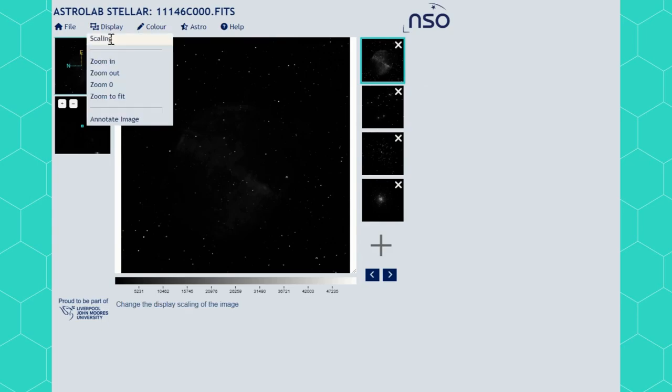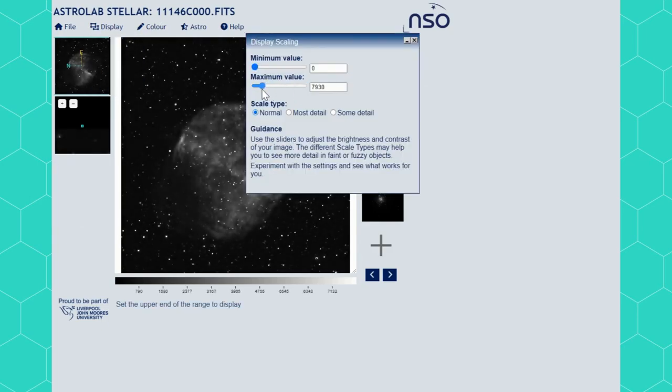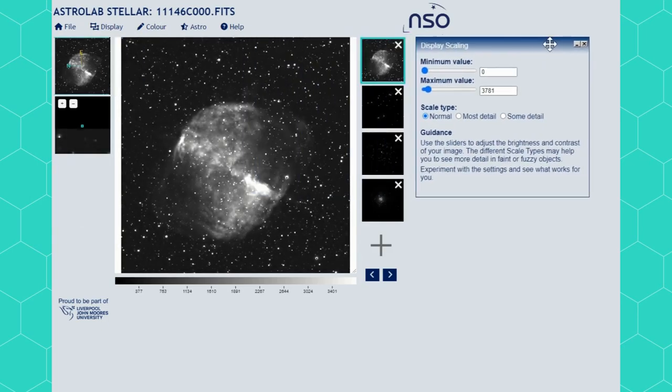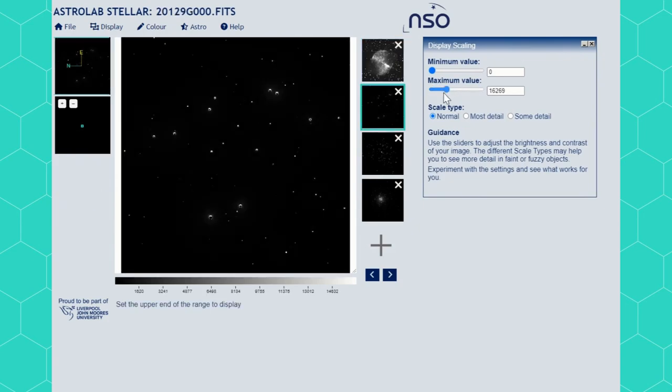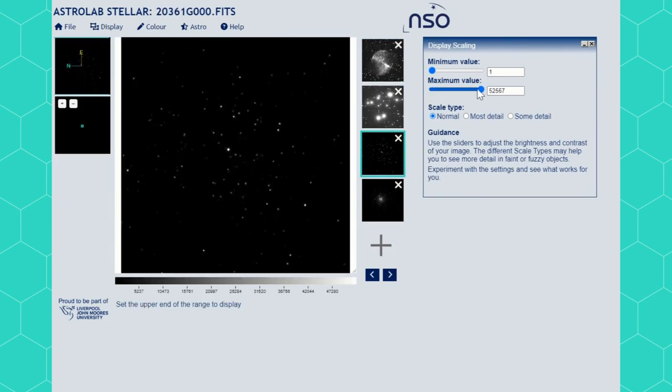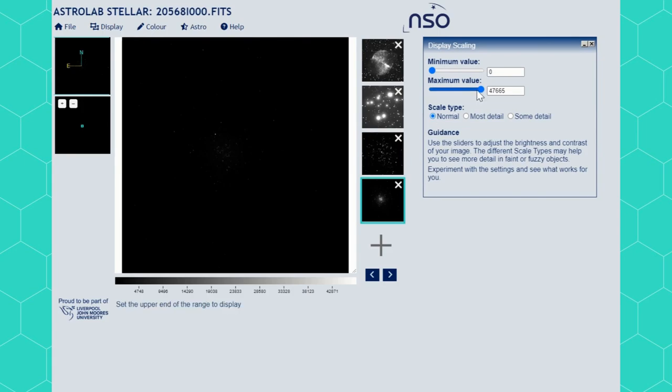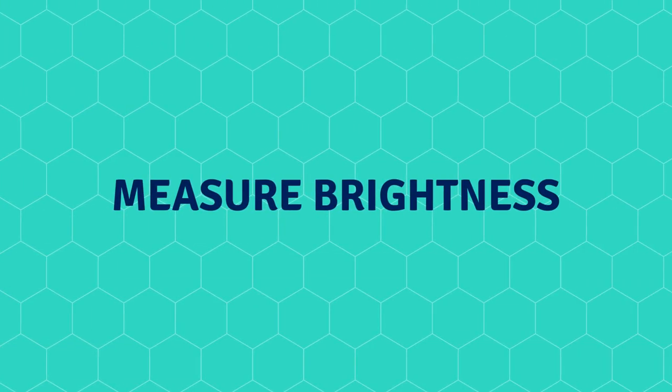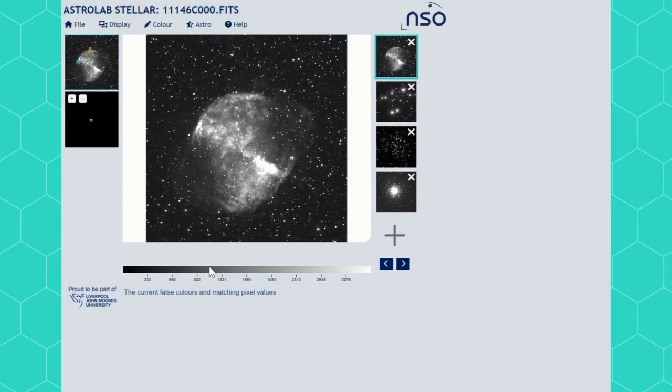To reveal details in your observation use the scaling tool in the display menu. When you are happy with your image and want to start measuring the brightness of objects, simply open the measure brightness option in the Astrolab menu.